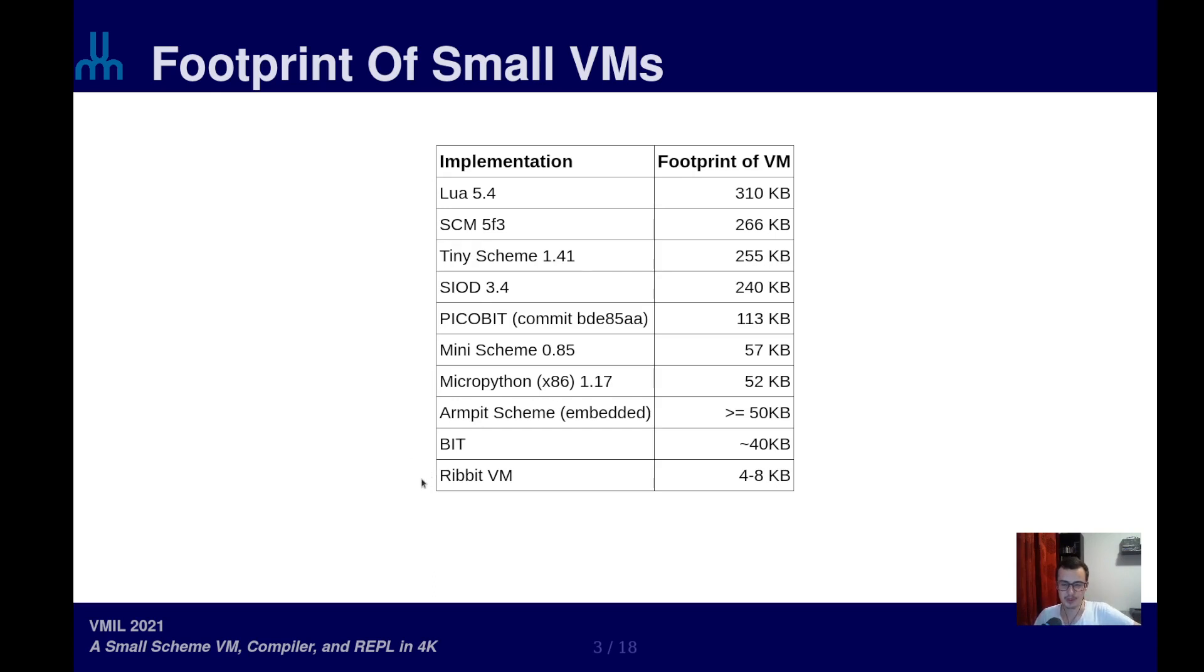And finally, at the bottom of the table, you find our own implementation of a small Scheme virtual machine, the Ribbit virtual machine. At a footprint of between 4 and 8 kilobytes, this is quite a bit smaller than the rest of the implementations found in this table.